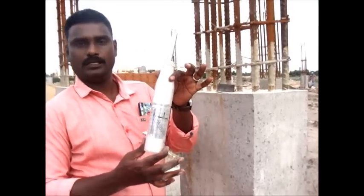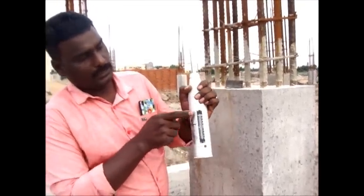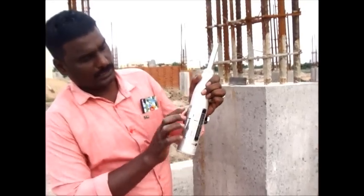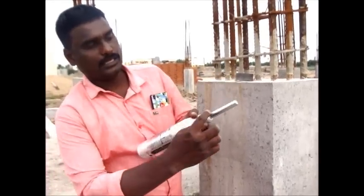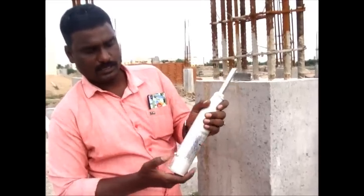This is the rebound hammer. This is the rebound number. And at the back side you can find the graph sheet and plunger at the front. And this is the lock.